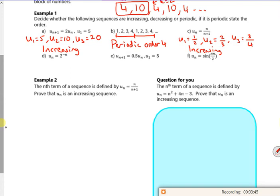So if n is 1, u1 is 2 to the power minus 1, so that's a half. When n is 2, u2 is 2 to the power minus 2, so that's a quarter. When n is 3, u3 is 2 to the power minus 3, so that's an eighth. So that's decreasing.